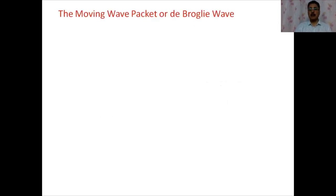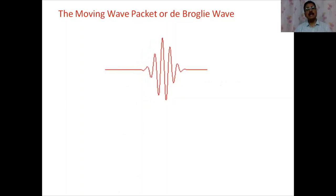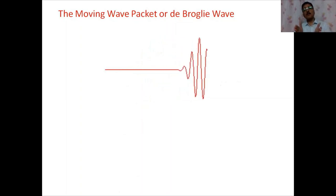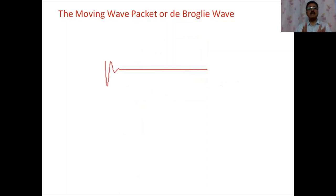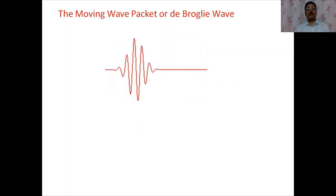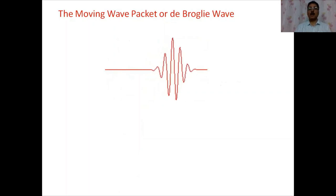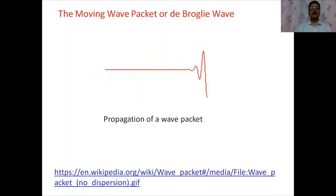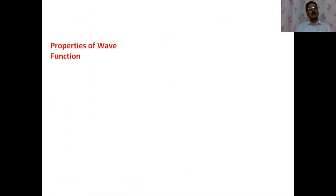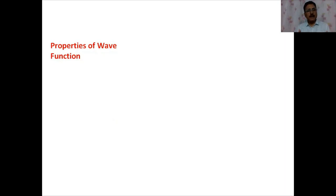The moving wave packet — the de Broglie wave — is shown here in an animated picture; the group moves as a whole, representing the wave associated with the moving particle. The wave function ψ is complex, travels at the same speed as the particle, and a wave group formed by superposition represents the de Broglie wave.